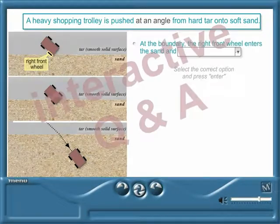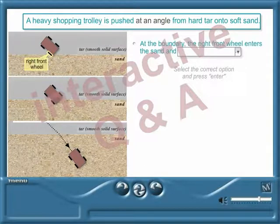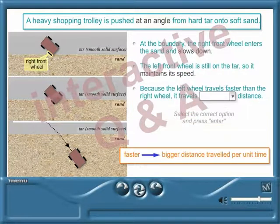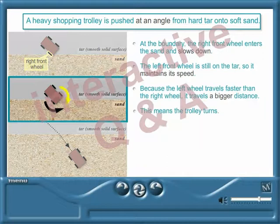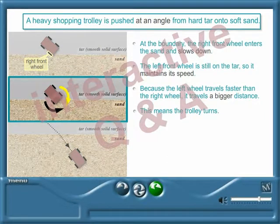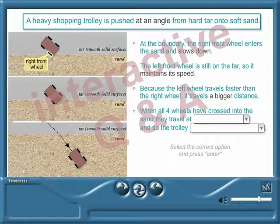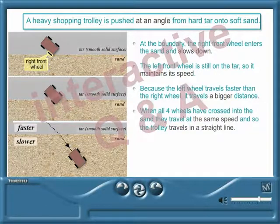At the boundary, the right front wheel enters the sand first. What happens to its motion? Wonderful! What happens when all four wheels have crossed into the sand? That's it! The direction changes at the boundary.